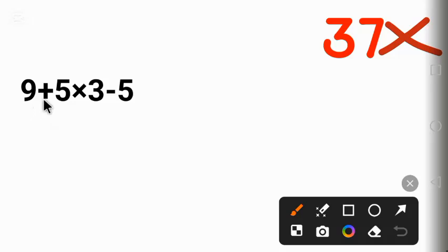The common mistake people make here is that they begin with this addition and when they add 9 and 5, they multiply it by 3 and subtract 5, they will get 37. And 37, as you can see, is a wrong answer.